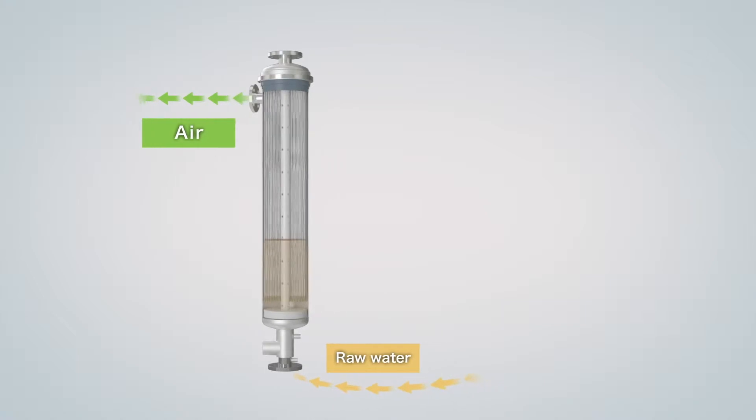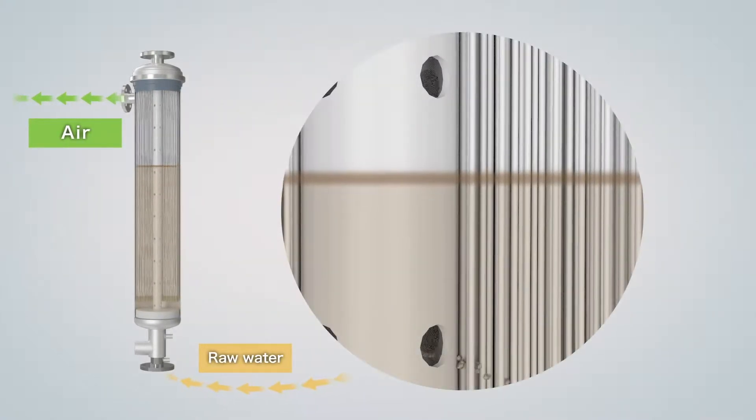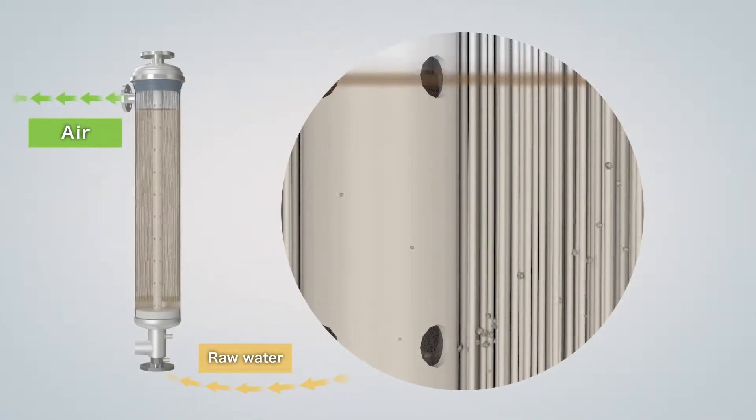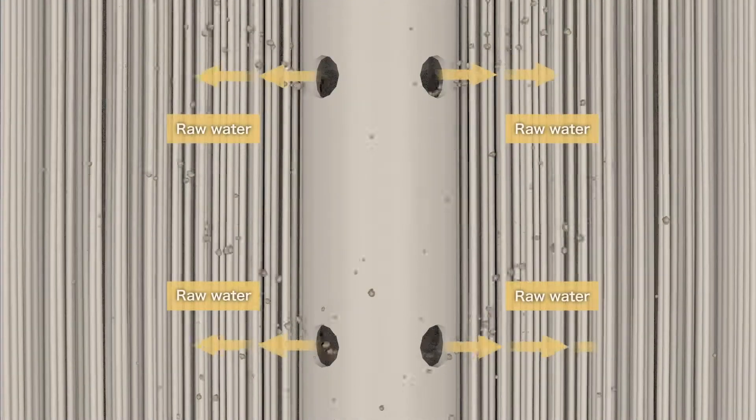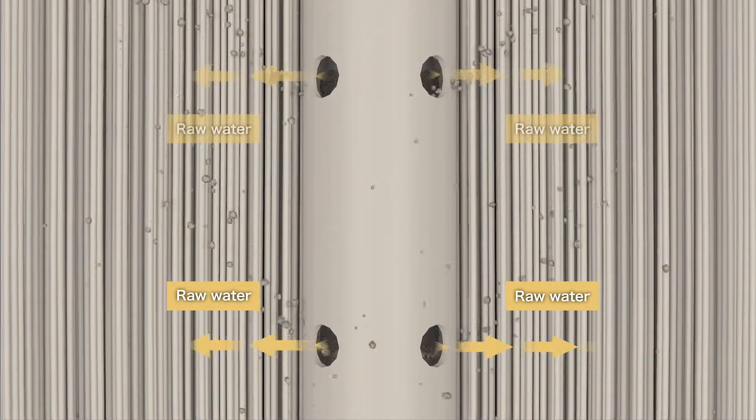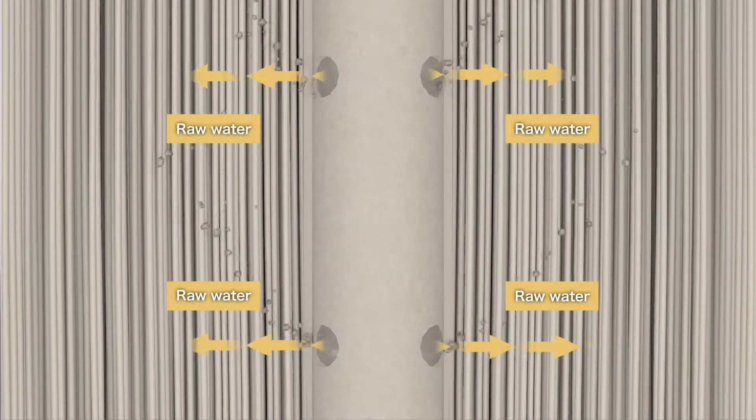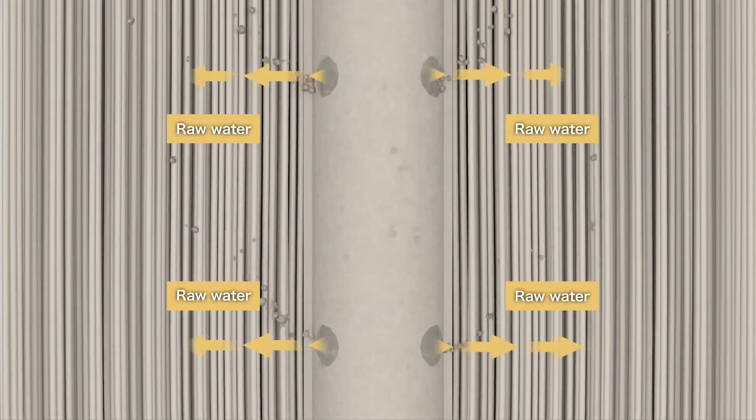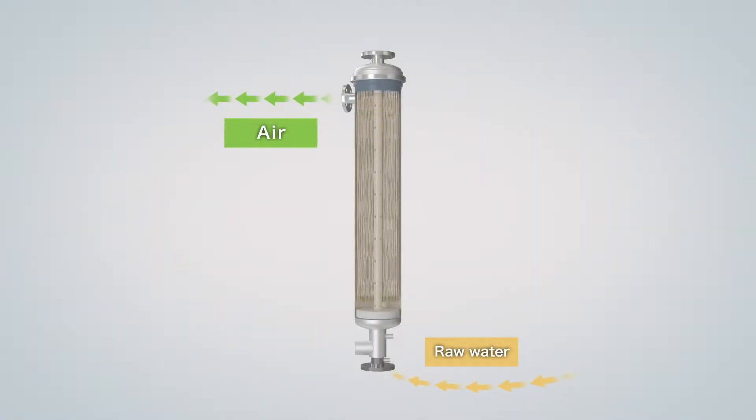The FG module has a center distributor that distributes raw water evenly to its hollow fiber membranes. The hollow fiber membranes filtrate the distributed raw water and so bacteria and particles are removed.